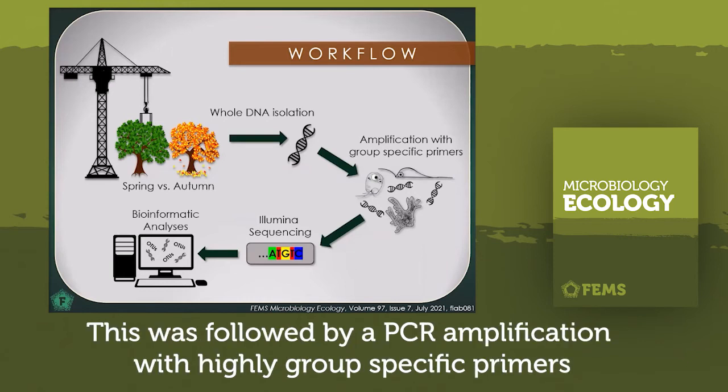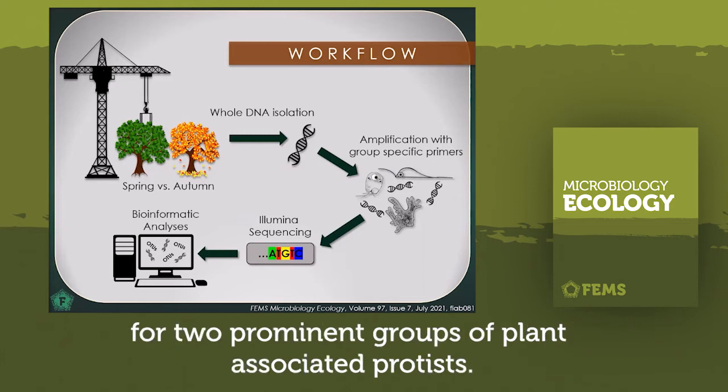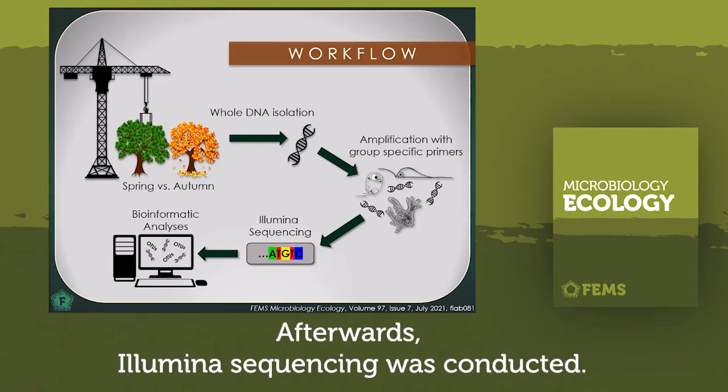This was followed by a PCR amplification with highly group-specific primers for two prominent groups of plant-associated protists. Afterwards, Illumina sequencing was conducted.